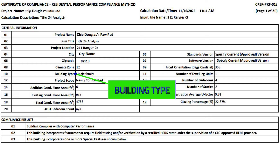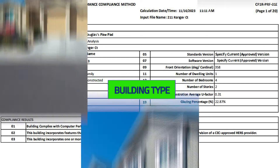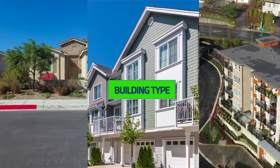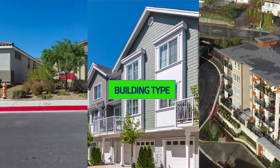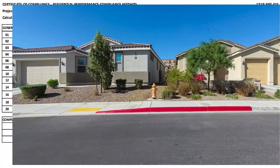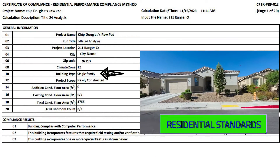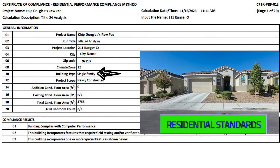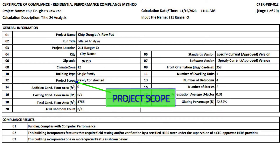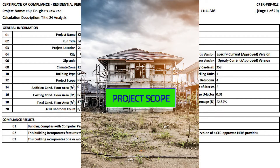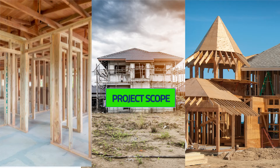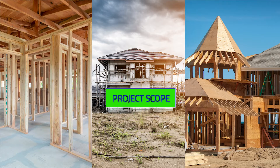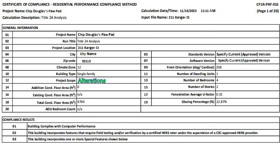Building type defines the category of your construction, which dictates the applicable energy standards. In this example, it's designated as single-family, therefore the residential standards apply. Project scope describes the nature of your project, such as newly constructed, addition, or alteration — and each of those project scopes has its own energy compliance forms.